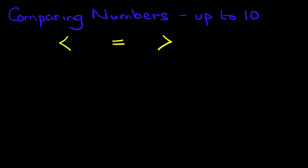Let's suppose we have oranges and apples. On the left hand side, let's say we have an orange over here, another orange over here, another one here, another one here, and another one here — so there are our oranges. Now we're going to compare them with green apples. We've got a green apple over here, another one here, and one more here. So we've got oranges on the left and apples on the right.